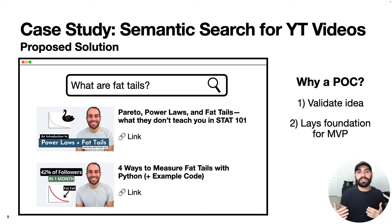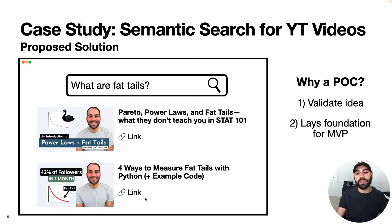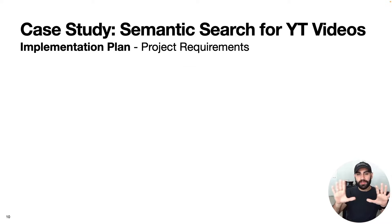The second reason is that with data science projects, efforts tend to stack on top of each other. So if I properly build this proof of concept for YouTube videos, it should only be a marginal effort to include my Medium articles into the same interface. Now we have a clear picture of what the solution will look like — how do we actually make that happen?